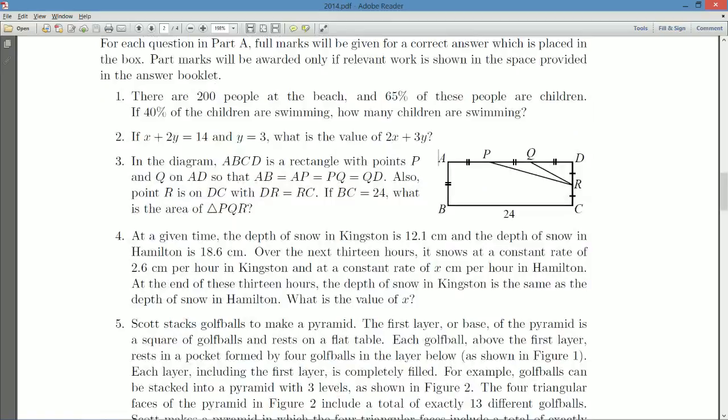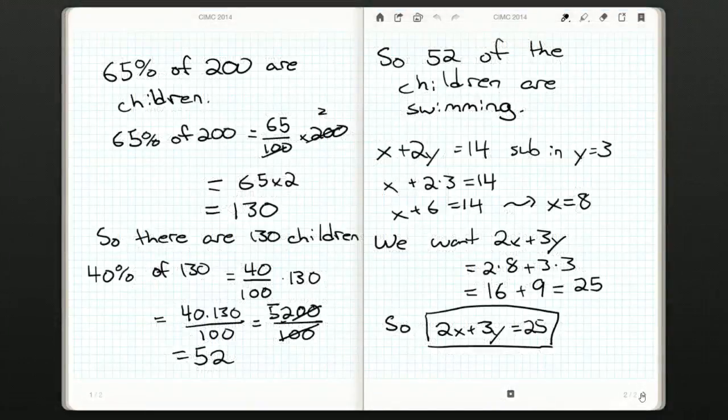Also we have a point R on DC with DR equal to RC, so R exactly splits this in half. If BC is 24, what is the area of triangle PQR? Nice question. We'll probably have to do a little bit of diagram chasing to figure out some lengths. So let's draw the picture first.